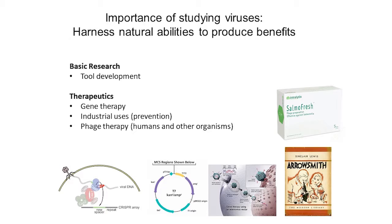Viruses are also important from a basic tool development standpoint. Many people have used molecular cloning techniques, and we hear things about CRISPR in the news. Understanding the basics of viral biology and bacteriophage can lead to all sorts of new types of development, such as this product, Samofresh, which I really love. Everyone here has probably had Jimmy John's, and they use these kinds of surfactants — bacteriophage — to take away the bacterial threat from our food. So there are good things about them as well as the bad.